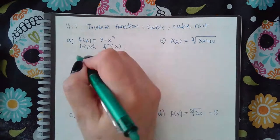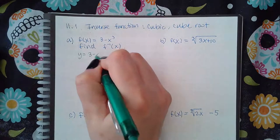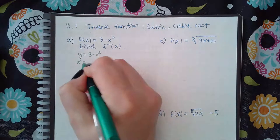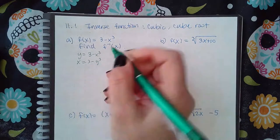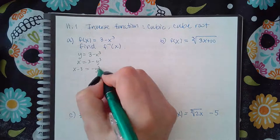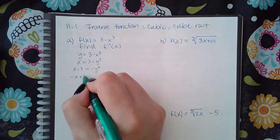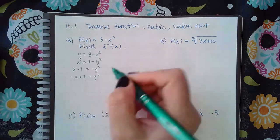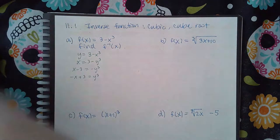So the first one, we're going to change the f of x to y, interchange the x and the y, and then we're going to solve. So I'm going to minus 3, then I'm going to divide by negative 1, and I'm going to take the cube root on both sides.